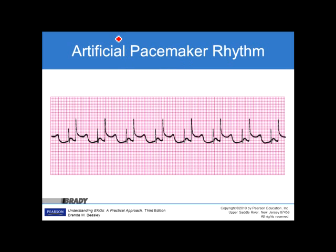This right here is an artificial pacemaker — it is an atrial pacemaker. The pacer spike is atrial in origin, the atria responded, and then gave you a QRS complex. The QRS complex appears normal.